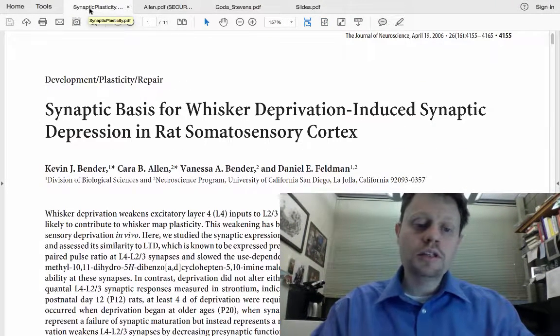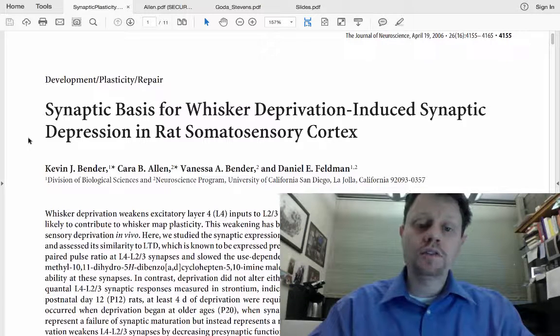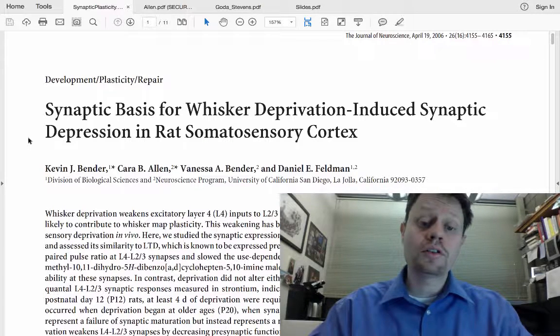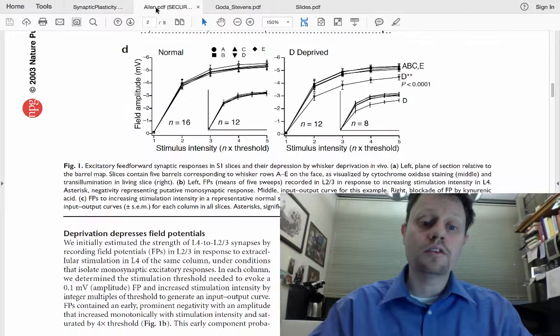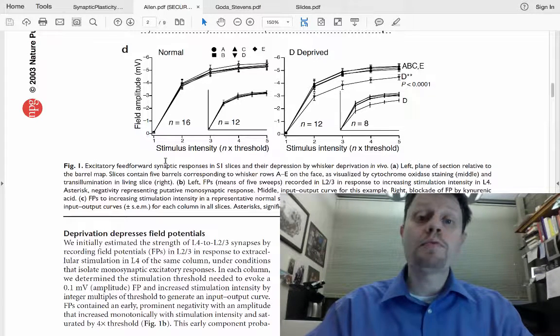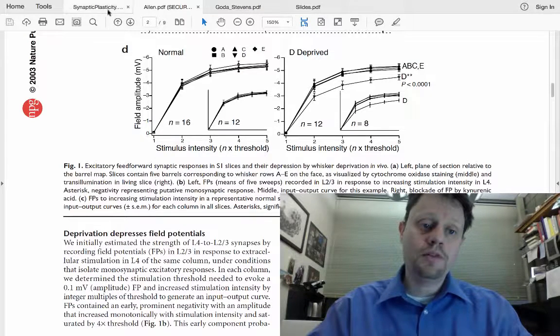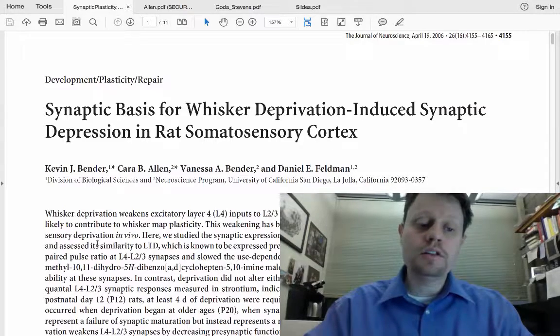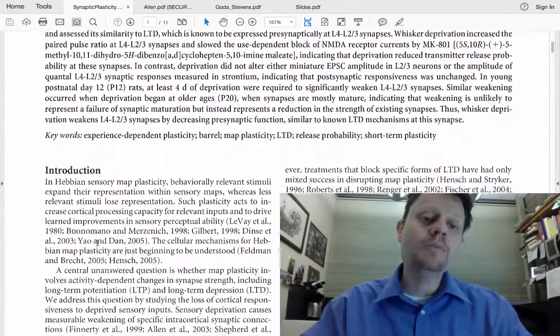So, returning to this study as our example study that we're going to be talking about, looking at the synaptic basis of whisker deprivation-induced plasticity in somatic sensory cortex. In terms of background work that they're drawing on, they're drawing on a study where they previously demonstrated that synapses get weaker after a period of sensory deprivation. Now what they're going to do is that same sort of sensory deprivation, but then ask what specifically is different about the synapses.